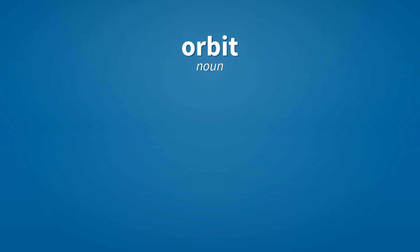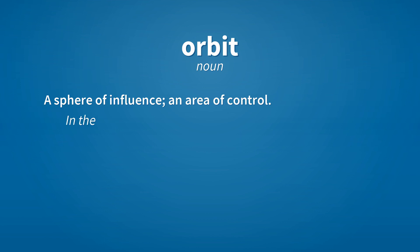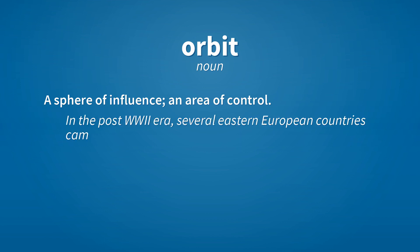Orbit. Noun. A sphere of influence, an area of control. In the post-World War II era, several Eastern European countries came into the orbit of the Soviet Union.